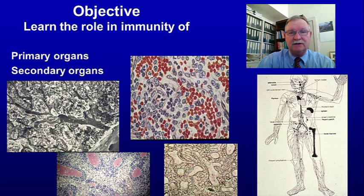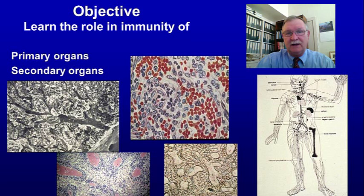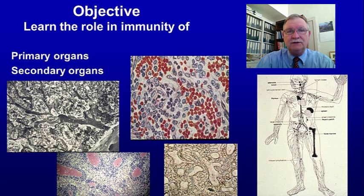The secondary organ system gets the reactive cells produced in the primary organs into the vicinity of and interacting with the antigens that those cells can respond to. So primary organs are for producing reactive cells, and secondary organs are to get them to interact with antigens so they can react to whatever antigens they're exposed to. If this information is useful to you, please share it with your colleagues and friends.